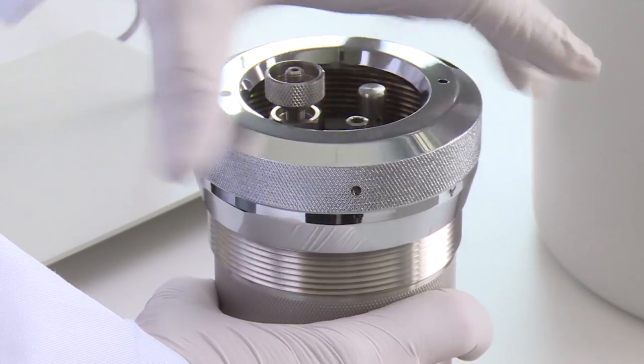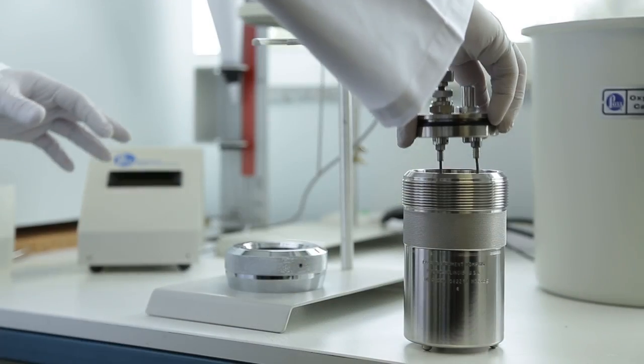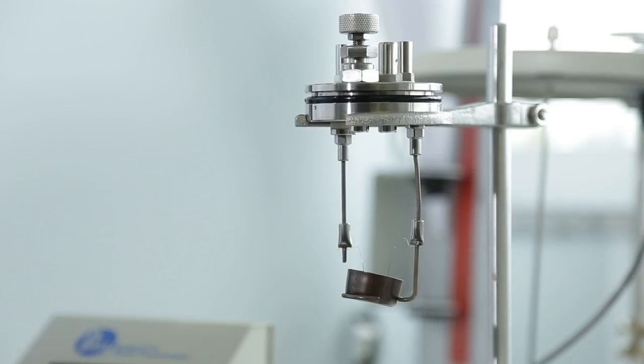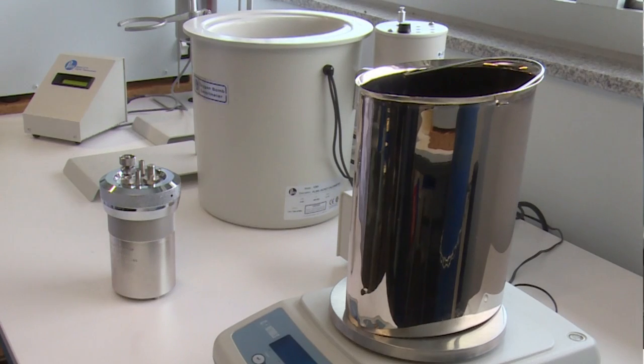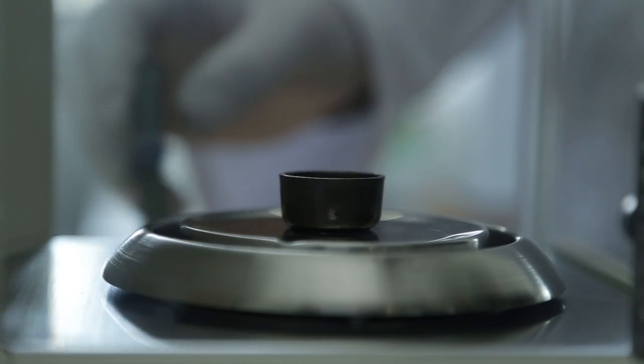Oxygen bomb calorimeter consists of the oxygen combustion vessel or oxygen bomb, the calorimeter jacket with its cover, the oval bucket, the crucible, and other accessories.